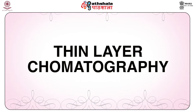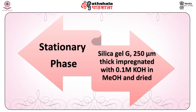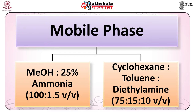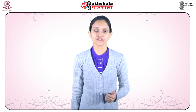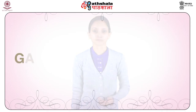For thin layer chromatography qualitative analysis: stationary phase is silica gel G of 250 micrometer thickness impregnated with 0.1 molar potassium hydroxide in methanol and dried. Mobile phase one: methanol and 25% ammonia in the ratio of 100:1.5 (v/v). Mobile phase two: cyclohexane, toluene and diethylamine in the ratio of 75:15:10. Visualization is done by acidified iodoplatinate. RF values: amphetamine 0.43 and methamphetamine 0.31 in solvent system one; amphetamine 0.15 and methamphetamine 0.28 in solvent system two.